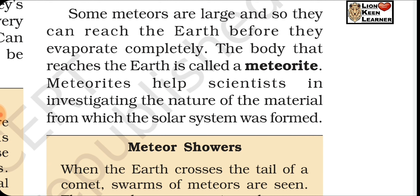Artificial satellites have many practical applications. They are used for forecasting weather, transmitting television and radio signals, telecommunication, and remote sensing. Remote sensing means collecting information from a distance — the satellite orbits the Earth, takes pictures, and collects information about Earth's weather and many other things.